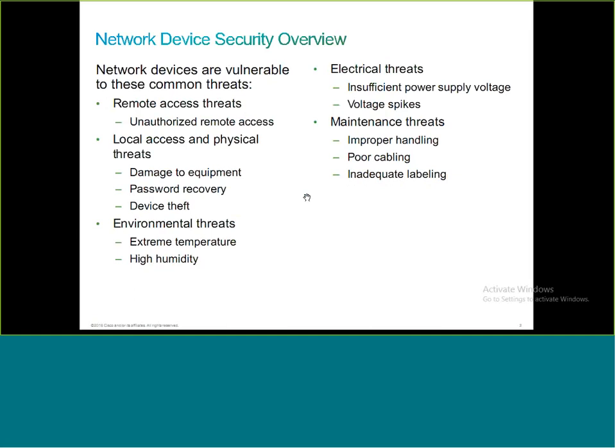Apart from remote access threats, we have physical threats — like damage to equipment, or anyone performing a password recovery by gaining physical access to the device. Devices like the Cisco 2800, 2900, 3500, 3800, and 3900 series are large and difficult to carry, but smaller devices like the Cisco 800 series or small business routers are very small — anybody can steal them. These are local or physical threats.